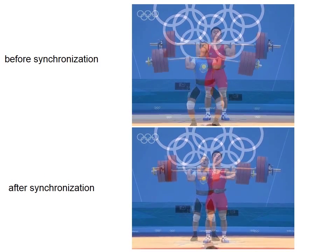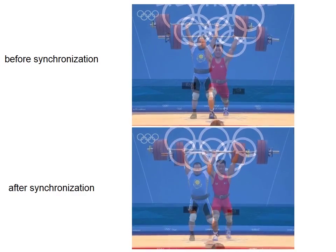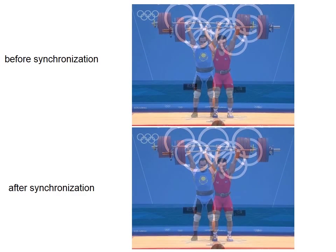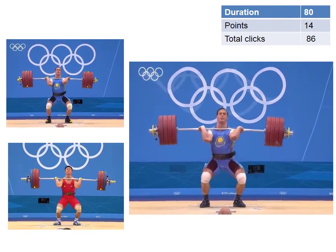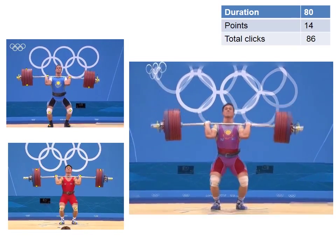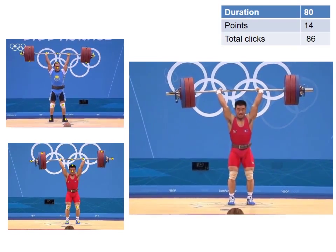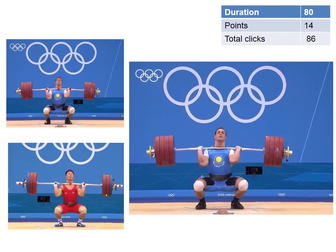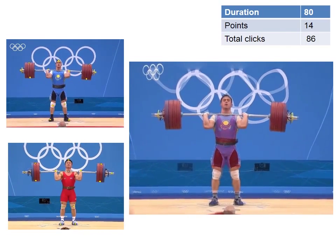In this example, the first stage can successfully synchronize the two weightlifters. However, due to the significant shift in the background, the resulting spatially optimized morph has undesirable distortions. This can only be addressed by masking the background prior to performing the morph.